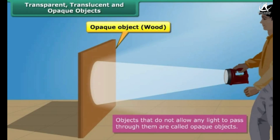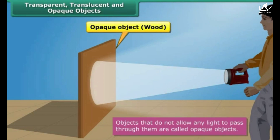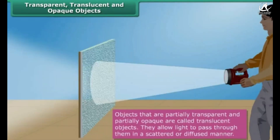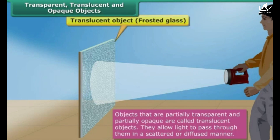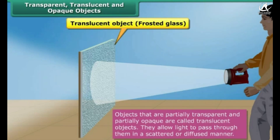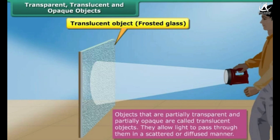Objects that are partially transparent and partially opaque are called translucent objects. They allow light to pass through them in a scattered or diffused manner. Frosted glass, tracing paper, and greased paper are examples of translucent objects.